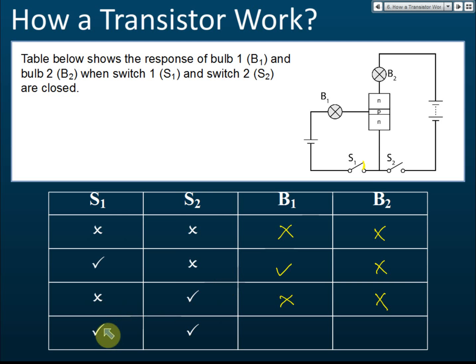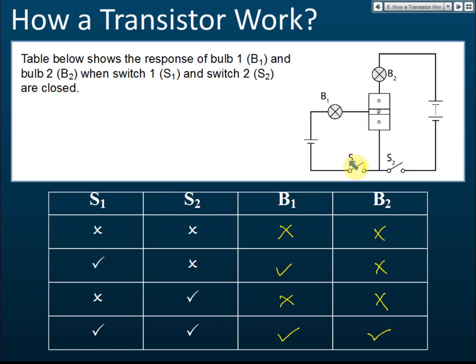In the last experiment, we switch on both S1 and S2. When S1 is switched on, B1 lights up — no problem, because it's forward bias. How about B2? Even though it's reverse bias, the bulb B2 will light up. So from this experiment we learn one thing: the collector circuit is controlled by the base circuit. Even though the collector circuit is complete, if we do not switch on the base circuit, current cannot flow in the collector circuit.